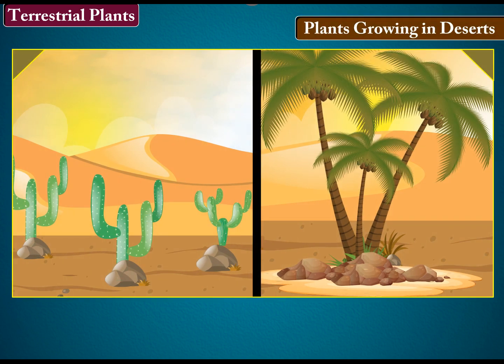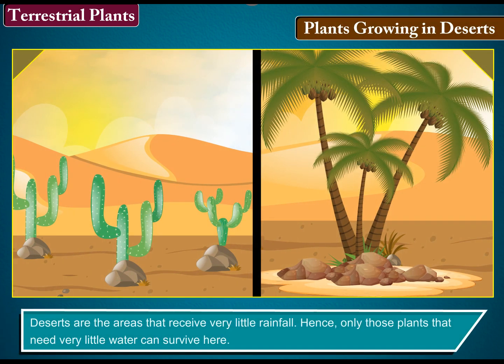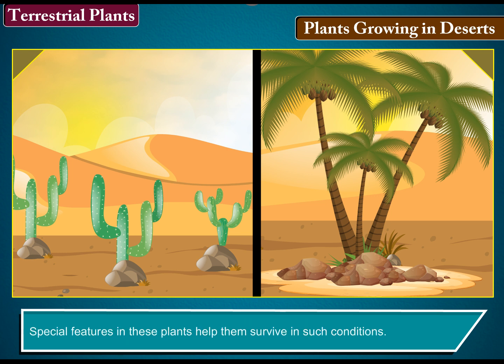Plants growing in deserts: deserts are areas that receive very little rainfall. Hence, only those plants that need very little water can survive here. Special features in these plants help them survive in such conditions.